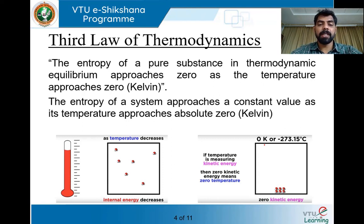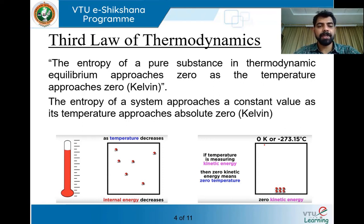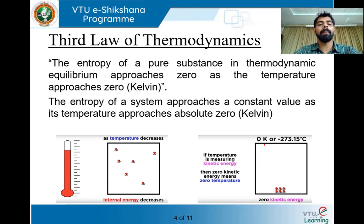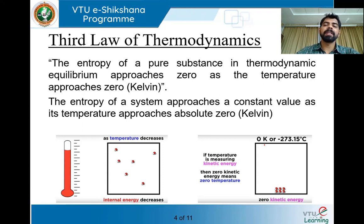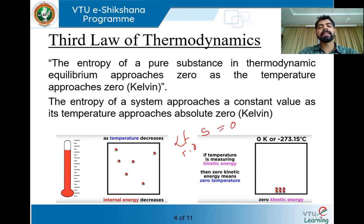So what does the 3rd law of thermodynamics deal with? The 3rd law of thermodynamics basically deals with entropy of a system. It states that the entropy of a pure substance in thermodynamic equilibrium approaches zero as the temperature approaches zero. That means the entropy of a pure system in thermodynamic equilibrium approaches zero — as temperature approaches absolute zero, the entropy of a system will also be equal to zero.